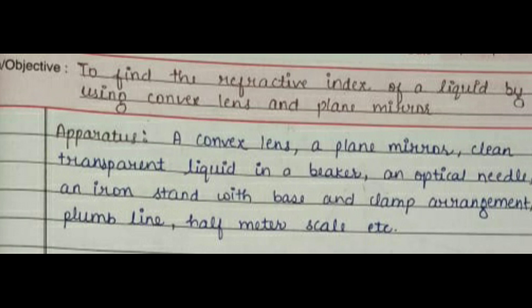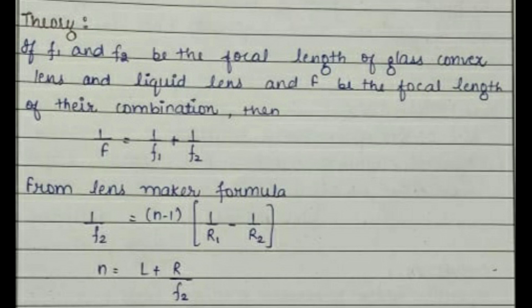This image shows the theory on which the practical is based. It is basically based on the combination of focal lengths of two mirrors or lenses, represented by capital F. It is also based on the lens maker formula, that is: n is equal to l plus capital R upon f2.